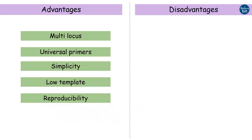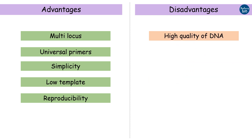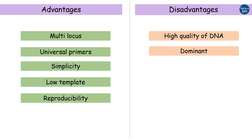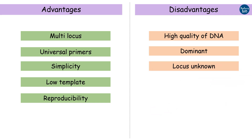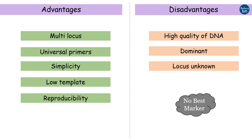Now some disadvantages: AFLP cannot be done with poor quality or degraded DNA. As AFLPs are dominant in nature, they cannot detect homozygous or heterozygous individuals. One cannot ascertain which fragment belongs to which DNA locus, as AFLP is multi-locus in nature. It must be remembered that none of the existing markers can be called the best marker — every marker has its own advantages and disadvantages, and depending upon the situation, one or more markers may be used.